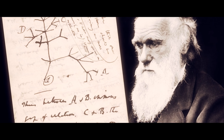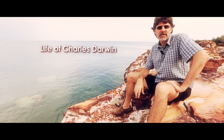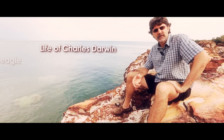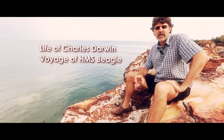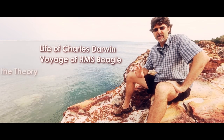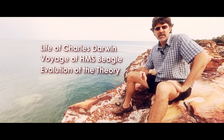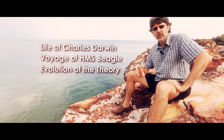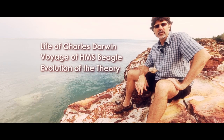In the first part, we will examine the life of Charles Darwin — his early years, the voyage of the Beagle, and also how he came to frame his theory of natural selection and descent by modification, or transmutation, as it was known then.